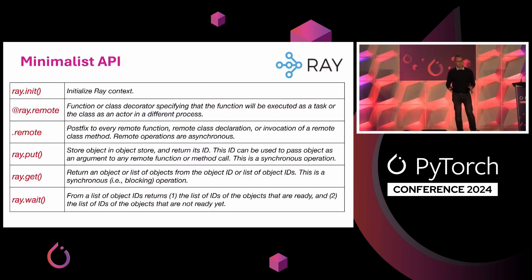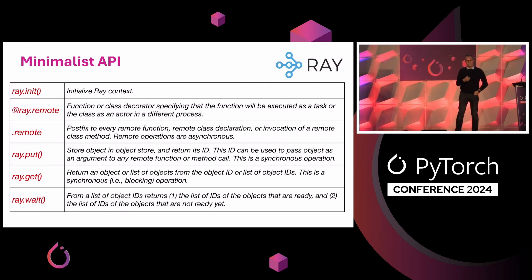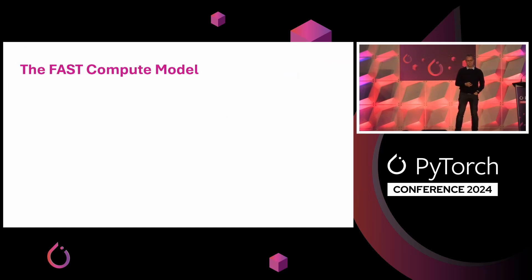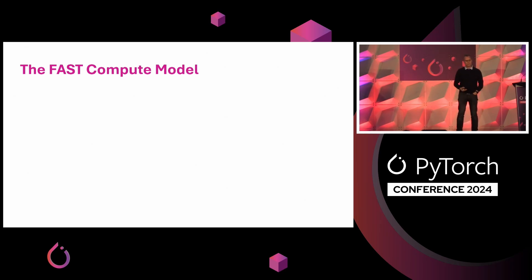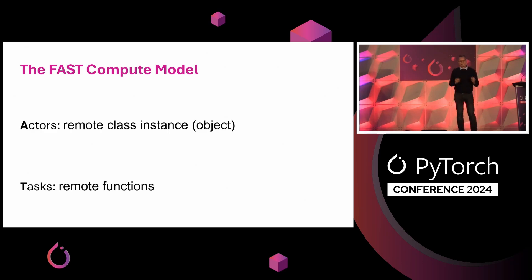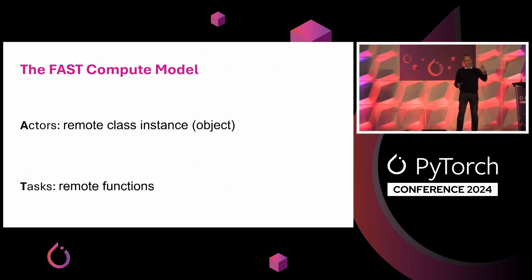Ray has a pretty minimalist API. This is the API of Ray Core — around six core functions. I'm going to show how you use them using some simple examples. But first, why is Ray general? To understand that, let's talk about the computation model that Ray implements. Ray takes the key compute abstractions provided by almost every programming language — functions and classes — and executes them remotely and transparently.